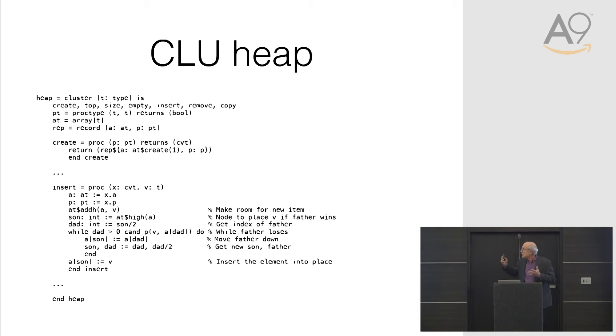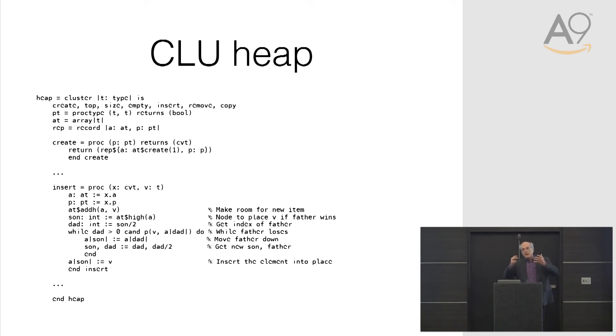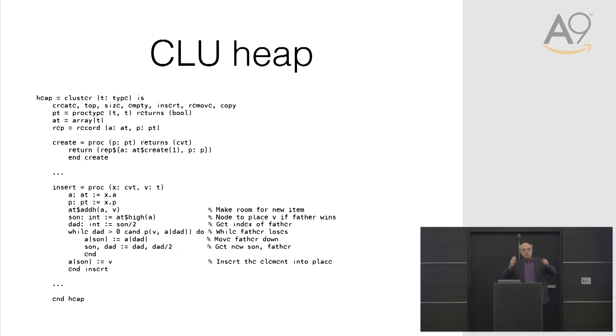But CLU doesn't have any way to specify the properties of the types. When you call create you need to pass in a procedure that takes two arguments, but you can't say it's a strict weak ordering — that's unfortunate. Interestingly, if we look at STL, it has a heap, but it's just some algorithms: make_heap, push_heap, pop_heap, is_heap. And they'll work with any linear structure that's randomly accessible — a static array, an array in your local frame, or a heap-allocated array. Alex's heap works with all of them.